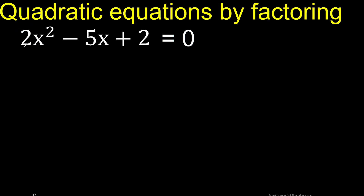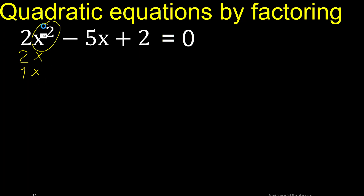2 — 2 numbers that multiply to give 2. 2 multiplied by 1 is 2. x multiplied by x is x squared. 2 numbers that multiply to give 2.